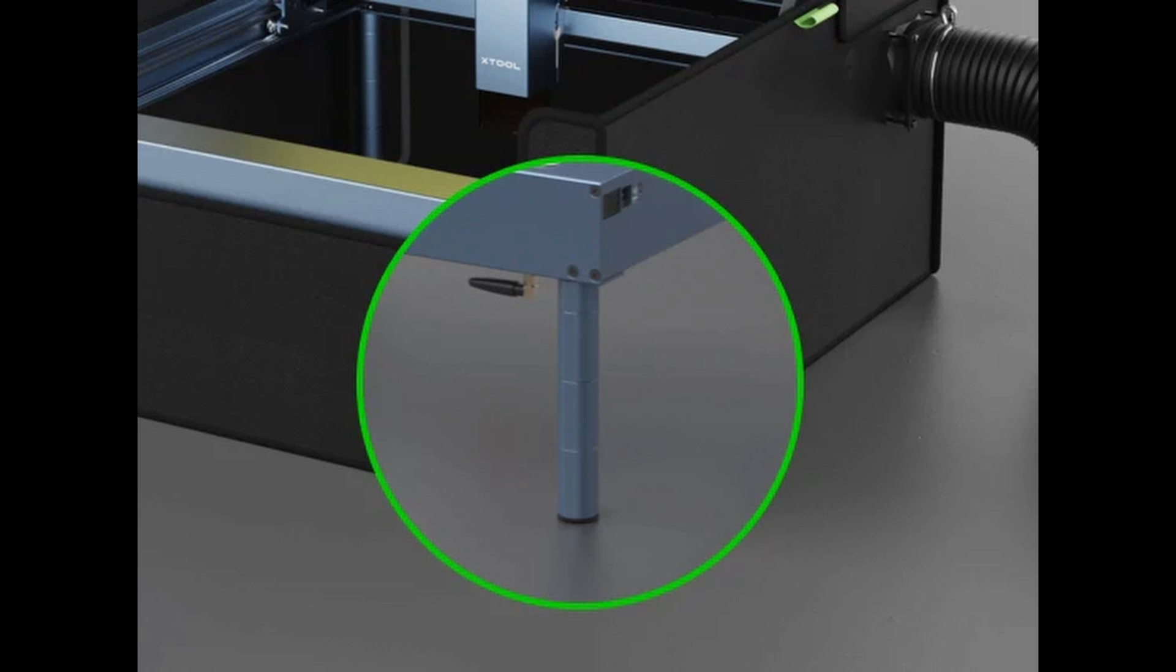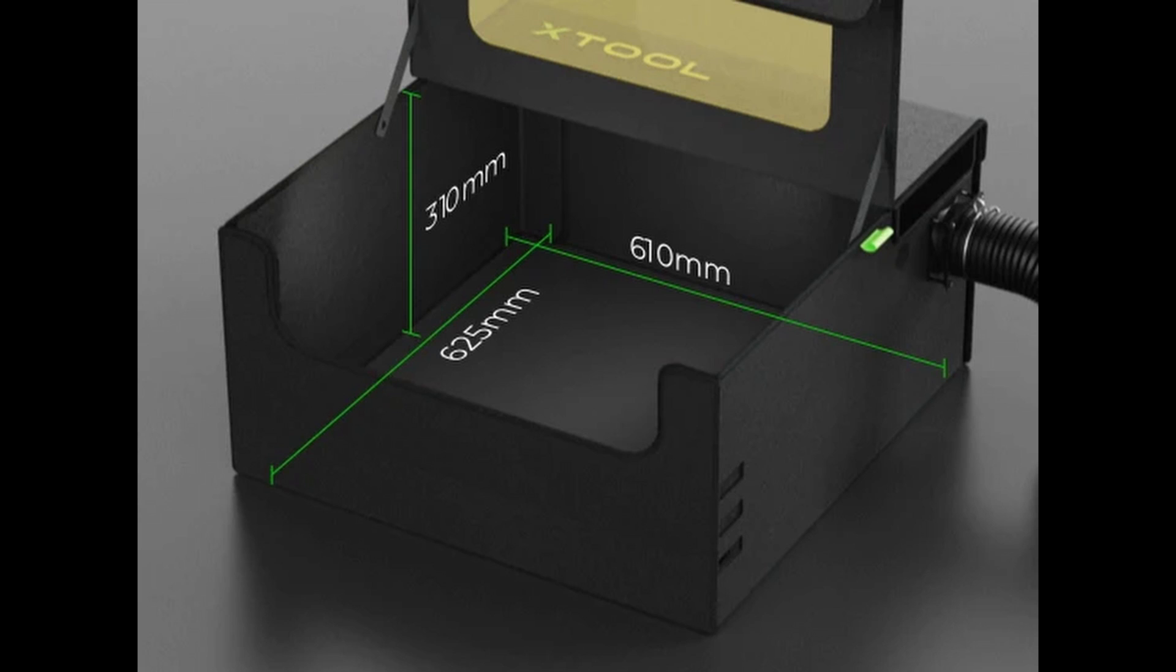Just in case you're wondering why this enclosure is so tall. It's so you can use standoffs, the risers. That way you can use that rotary. Also, the inside is 310, 625 by 610. Just in case you want to know if your laser might fit in it.